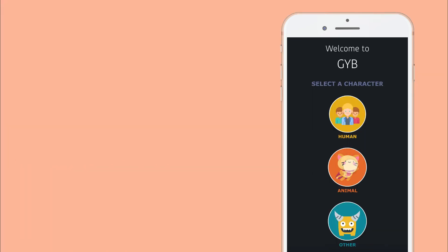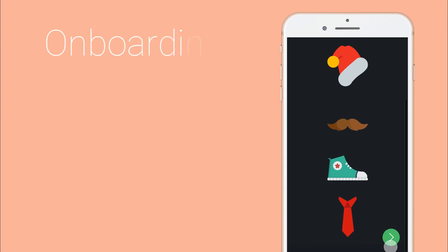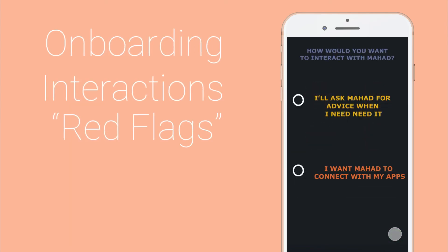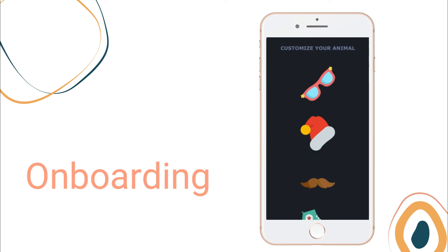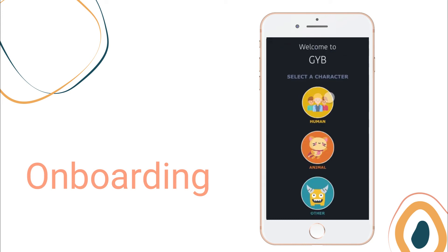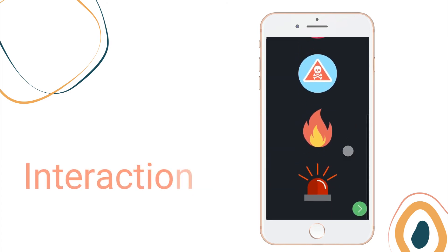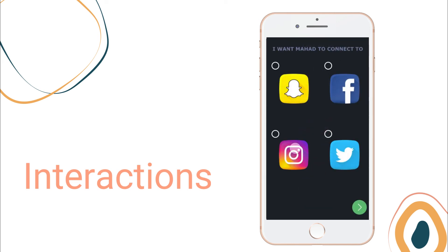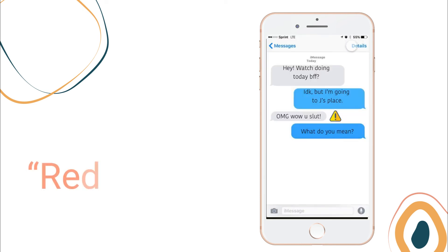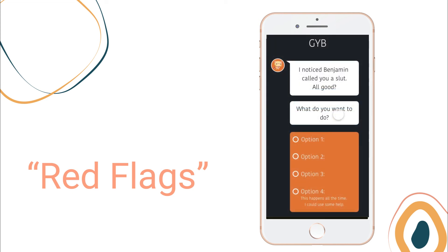The interactive prototype can be split into three parts: onboarding, interaction, and red flags. For onboarding, we let the users design their own characters so that they can choose something they are more comfortable using — sometimes they aren't comfortable with another human. In interactions, there is an option where the user can connect the app with their social media apps, which allows the app to step in and detect unhealthy behavior. When the app detects words or phrases that may be unhealthy or manipulative to the user, it can flag the text and see if the user wants help or suggestions.